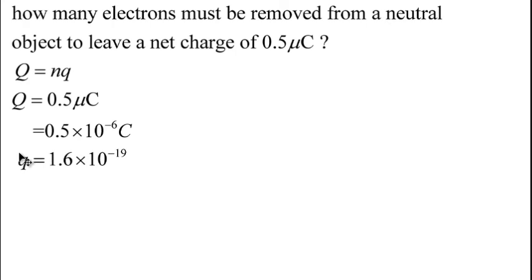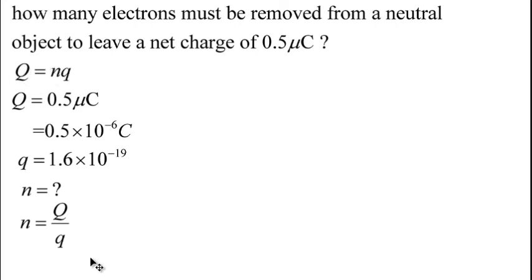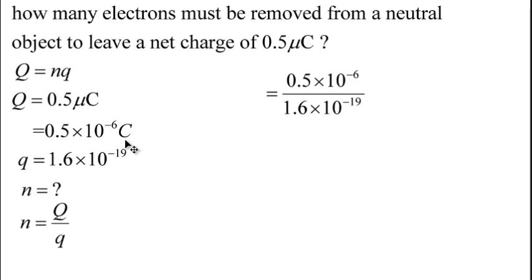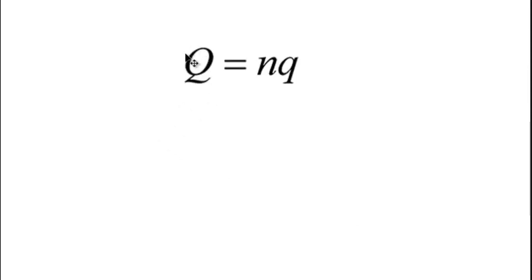Why do we use a positive sign for e here? Anytime you are looking for N, the constant e is always taken as positive. Making N the subject of the formula: N equals Q divided by e. Putting in the values gives N equals 3.15 times 10 to the power of 12 electrons. Generally, in this kind of equation, we are either looking for the number of particles or the total charge. Thank you so much.